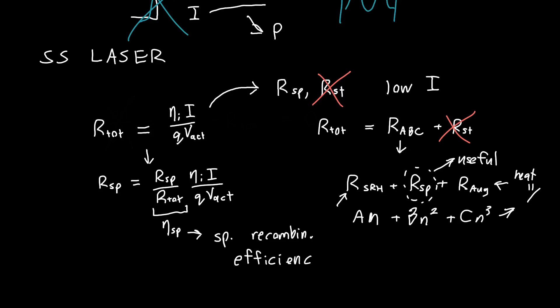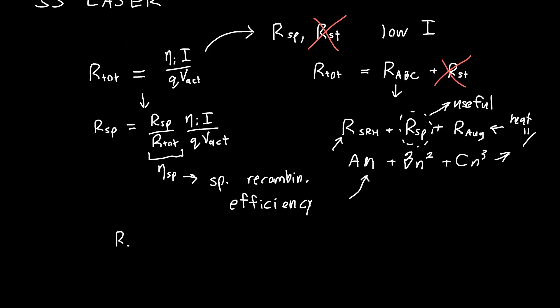And you might protest. You might be like, well, isn't that a function of n? Like, wasn't that something we were trying to solve for here? And you'd be right. And I apologize for this. But generally, we can treat eta spontaneous as a constant. And this is fairly easy to empirically measure. And it's fairly easy to calculate. So we treat it as a constant that's not a function of carrier density. And that makes our lives much easier.